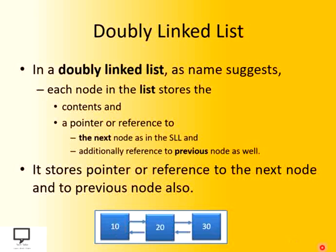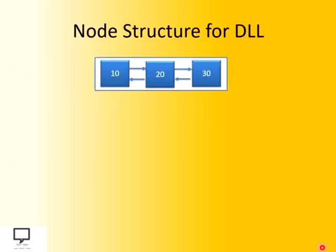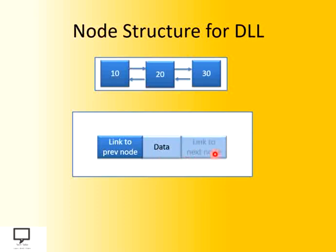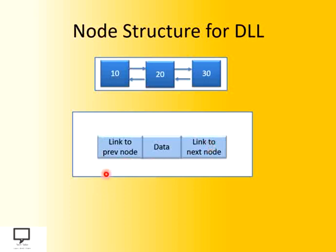As far as doubly linked list is concerned, let's see the node structure — how the node can be designed. In this node structure you can see that it is partitioned into three parts. The first one is the data part, that is the information part that stores information into the node. The second part is a link to the next node, or a pointer to the next node. The third part is a link to the previous node. So this is the node structure of DLL where it holds the address of the next node as well as the address of the previous node.